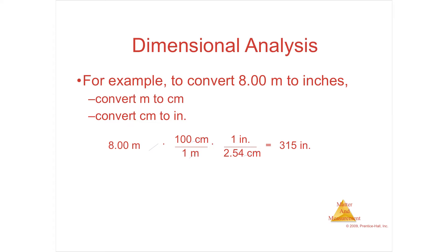Here's another example: 8 meters to inches. You've memorized 2.54 centimeters to the inch. If you only know centimeters to the inch and you're given meters, you have to go to centimeters first so that centimeters will cancel. That means going from meters to centimeters. One meter equals 100 centimeters, so meters go on the bottom and cancel. In one meter there are 100 centimeters, and 8 times 100 puts you in centimeters.